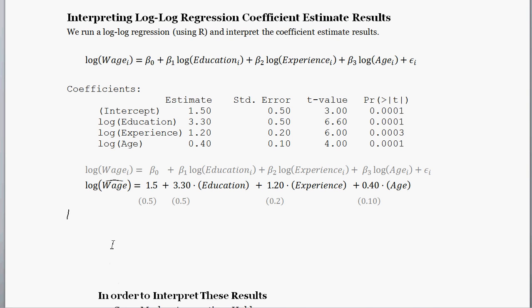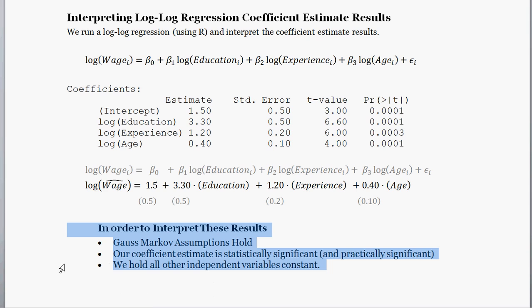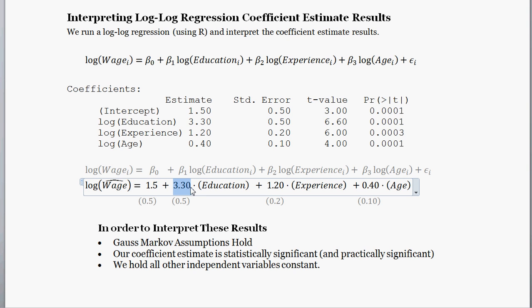Before we could interpret our results, we need to get a few assumptions out of the way. The first assumption is the Gauss-Markov assumptions. The Gauss-Markov assumptions need to hold in order for us to correctly interpret these regression coefficient estimates. Second, we need our regression coefficient estimates to be statistically significant. The t values are sufficiently large and the p values are sufficiently small, so they're statistically significant. They also need to be practically significant. Practically significant is a qualitative kind of thing, but it's in the sense that the results here can't be minuscule, they have to have a noticeable effect.